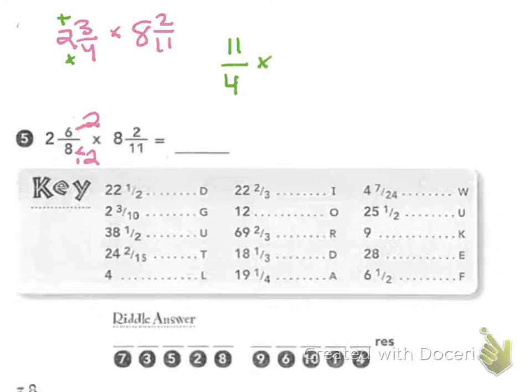I'm going to do the same thing to 8 and 2 elevenths. 8 times 11 is 88, plus 2 is 90. So I have 90 over 11.